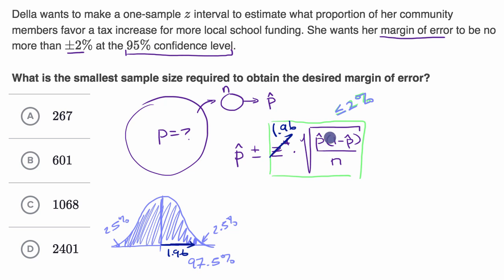But what about p-hat? We don't know what p-hat is until we actually take the sample. But this whole question is how large of a sample should we take? We want this stuff to be less than or equal to 2%, this is our margin of error.